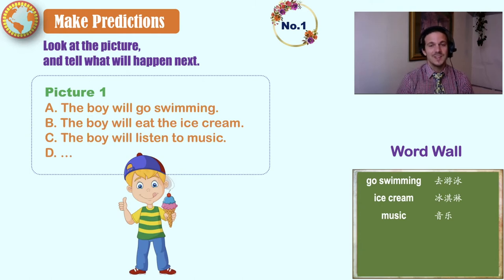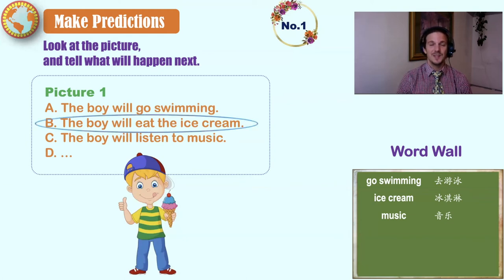I would like you to think about another fun event for D. What could the boy go and do? Okay, now back to the picture. The small boy is licking his mouth and holding delicious food. So is it A, B, C, or D? B, the boy will eat the ice cream.